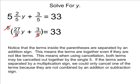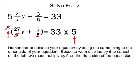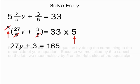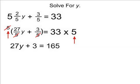Remember to balance your equation by doing the same thing to the other side of your equation. Because we multiplied by 5 to cancel on the left, we must multiply by 5 on the right side of the equation. After canceling out the denominators on the left and then multiplying on the right-hand side of our equation by 5, we have an expression which reads 27 times y plus 3 is equal to 165.